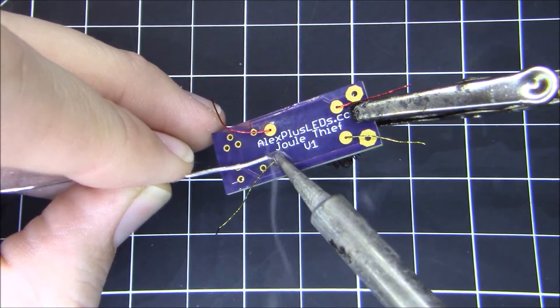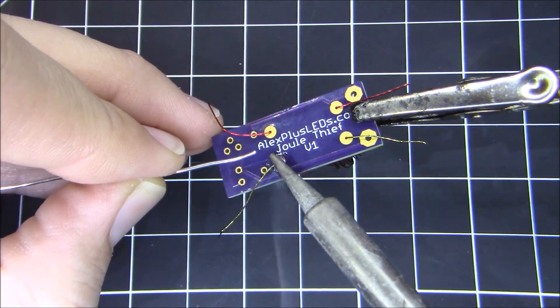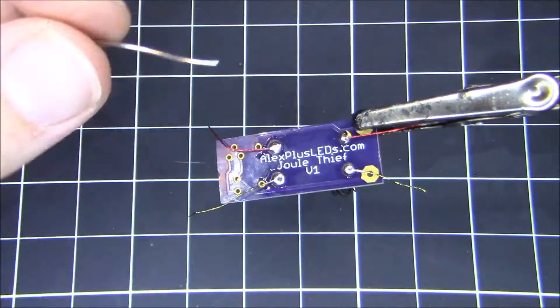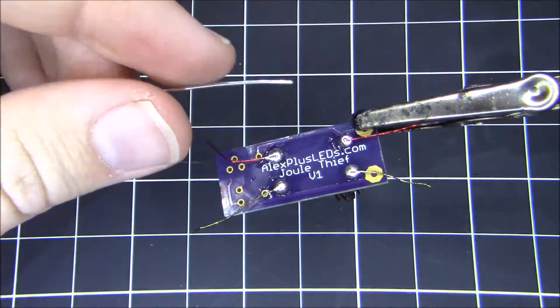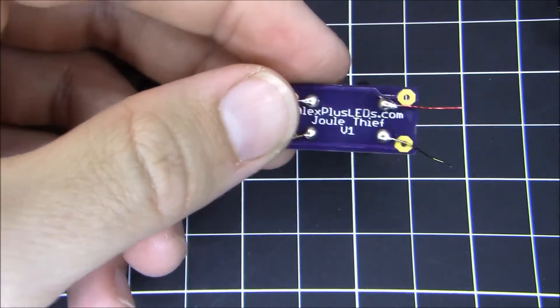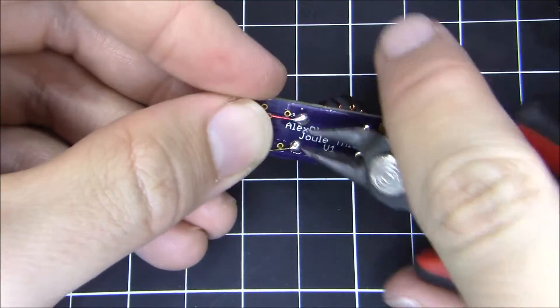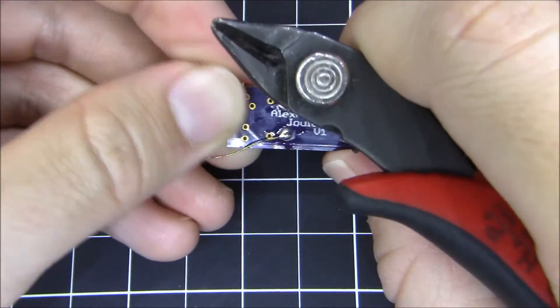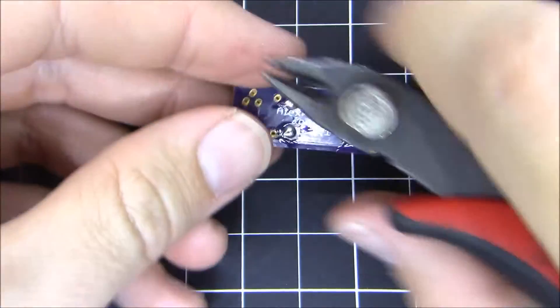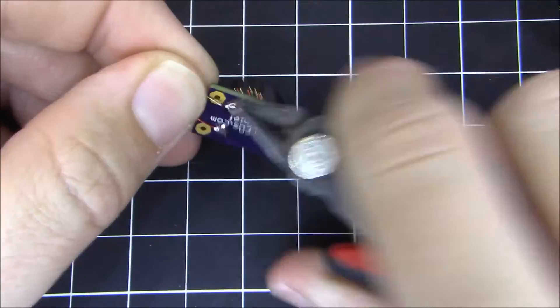Make sure you solder it well. The enameled wire needs a little bit of heat in order for the enamel to come off and the solder to stick to the copper inside the wire. And once the toroid has been soldered, what we're going to do is clip off the excess wire that is poking through the PCB, all four leads.